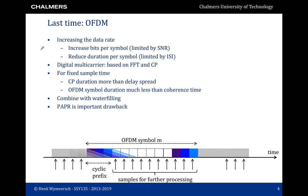We saw that for a fixed sampling time, the duration of the cyclic prefix should exceed the delay spread of the channel, and that the OFDM symbol duration should be much less than the coherence time, in order for having the same channel over one OFDM symbol. OFDM creates parallel channels in the frequency domain and can thus be easily combined with water filling if channel state information at the transmitter is known.